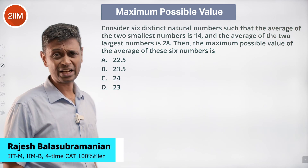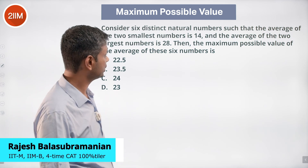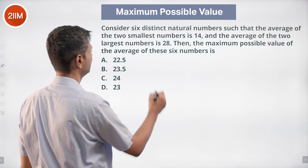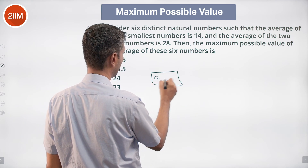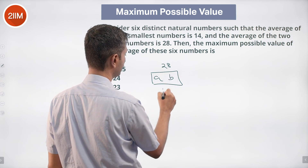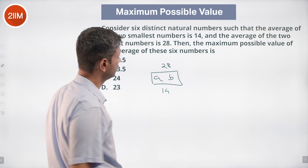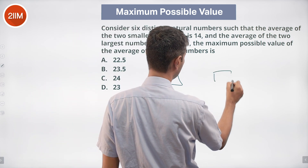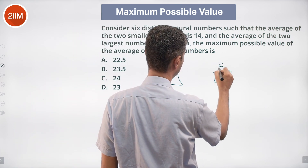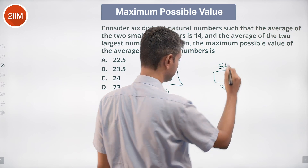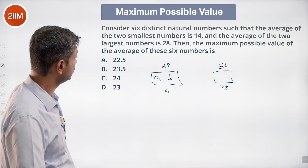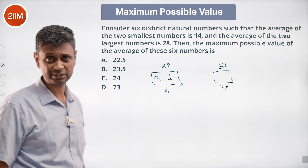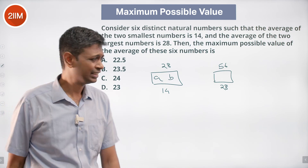Consider six distinct natural numbers such that the average of the two smallest numbers is 14 — so their sum is 28. The average of the two largest numbers is 28, so those two sum to 56.